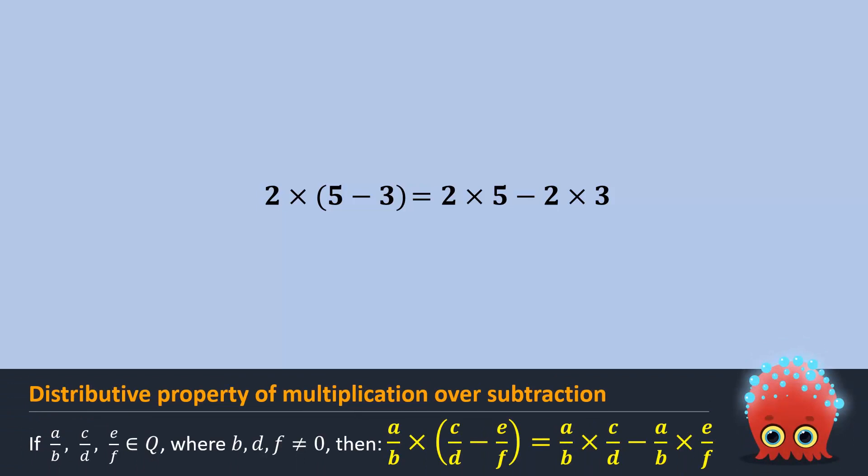In fact, for any three rational numbers a over b, c over d, and e over f, where b, d, and f are not equal to 0, the following expressions are equal. This is called the distributive property of multiplication over subtraction.